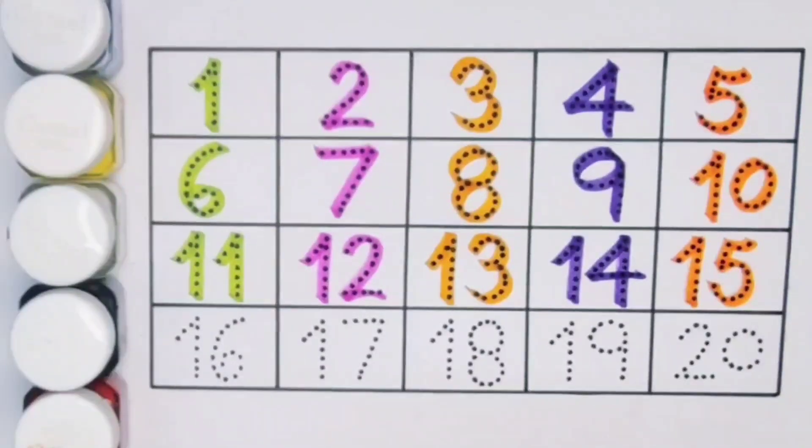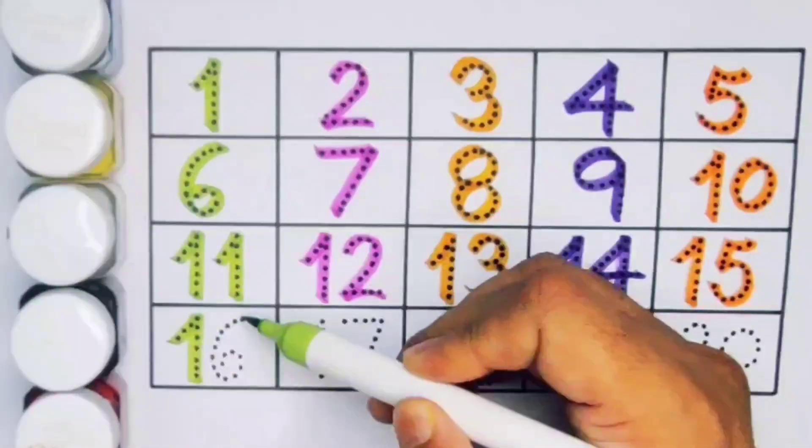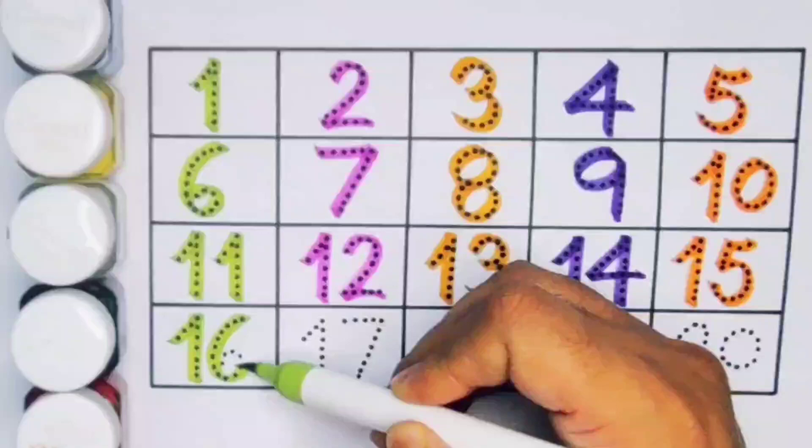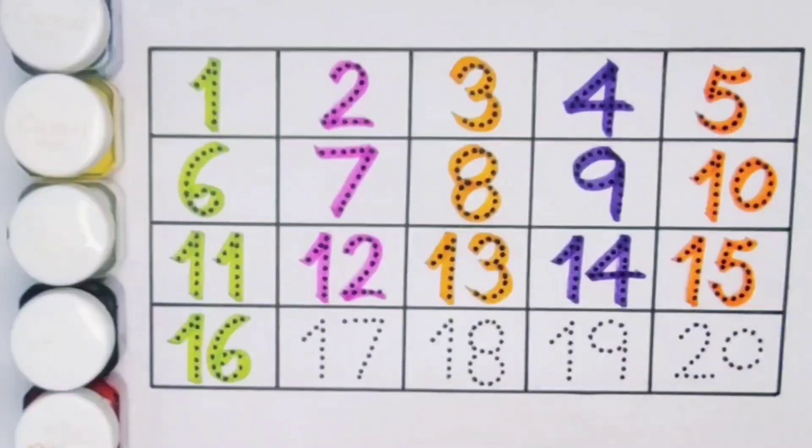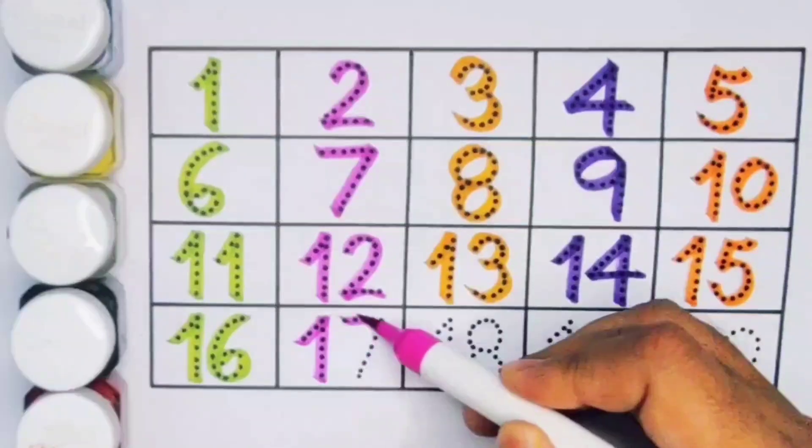Next kids, sixteen, one six sixteen, number sixteen. Next kids, seventeen, one seven seventeen, number seventeen.